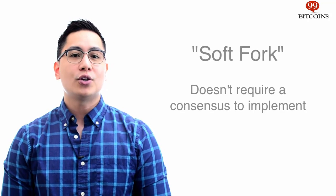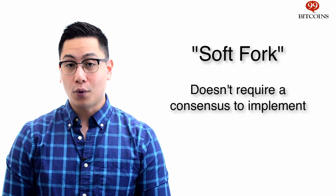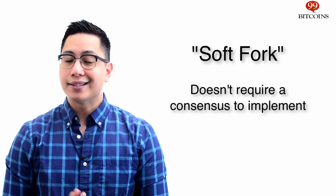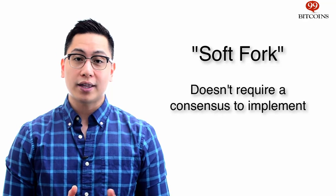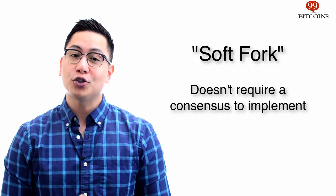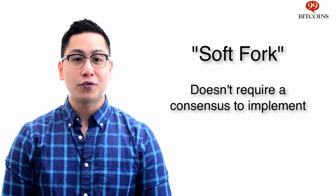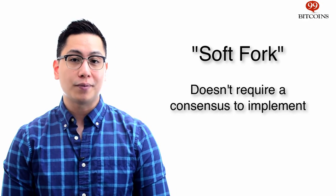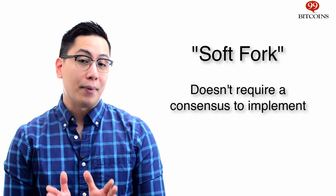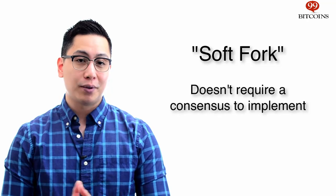What's special about SegWit is that a consensus of the entire Bitcoin network isn't required in order to make it work. This is known as a soft fork, meaning SegWit will work even if some users don't update their software to the new version, making it much easier to implement.